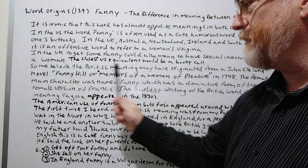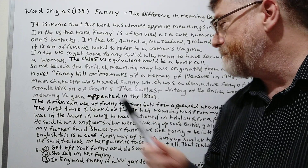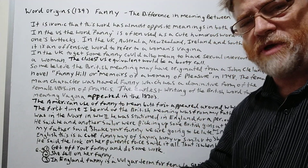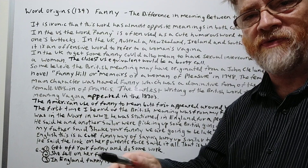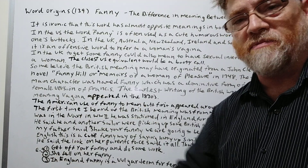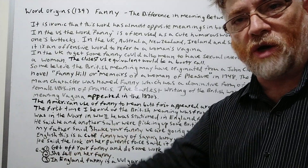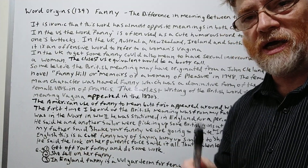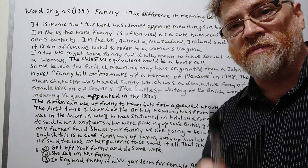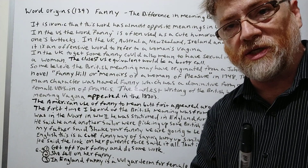The female main character was named Fanny, which is a diminutive form of a name — like a childhood nickname. For example, Johnny is a diminutive of John, or Joey is a diminutive of Joe. So Fanny is a diminutive form of the female version of the name Frances.